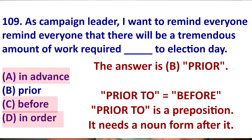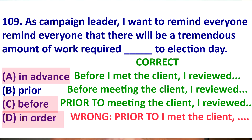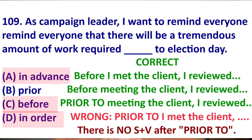Prior to means before, but it is only a preposition — a more formal version. For example: 'Before I met with the client, I reviewed the file' — correct. 'Before meeting the client, I reviewed the file' — perfect. 'Prior to meeting the client, I reviewed the file' — correct. But 'Prior to I met the client, I reviewed the file' — this is wrong. Remember, after 'prior to,' you use a noun form. Prior to equals before.